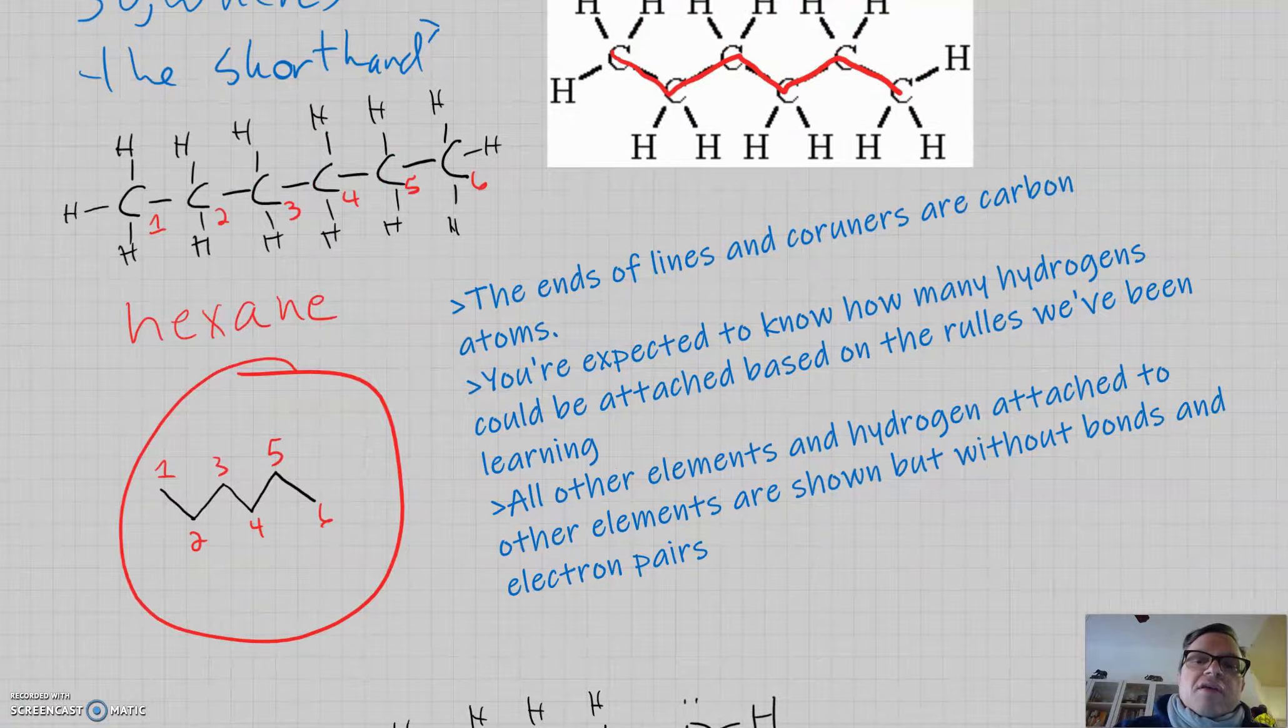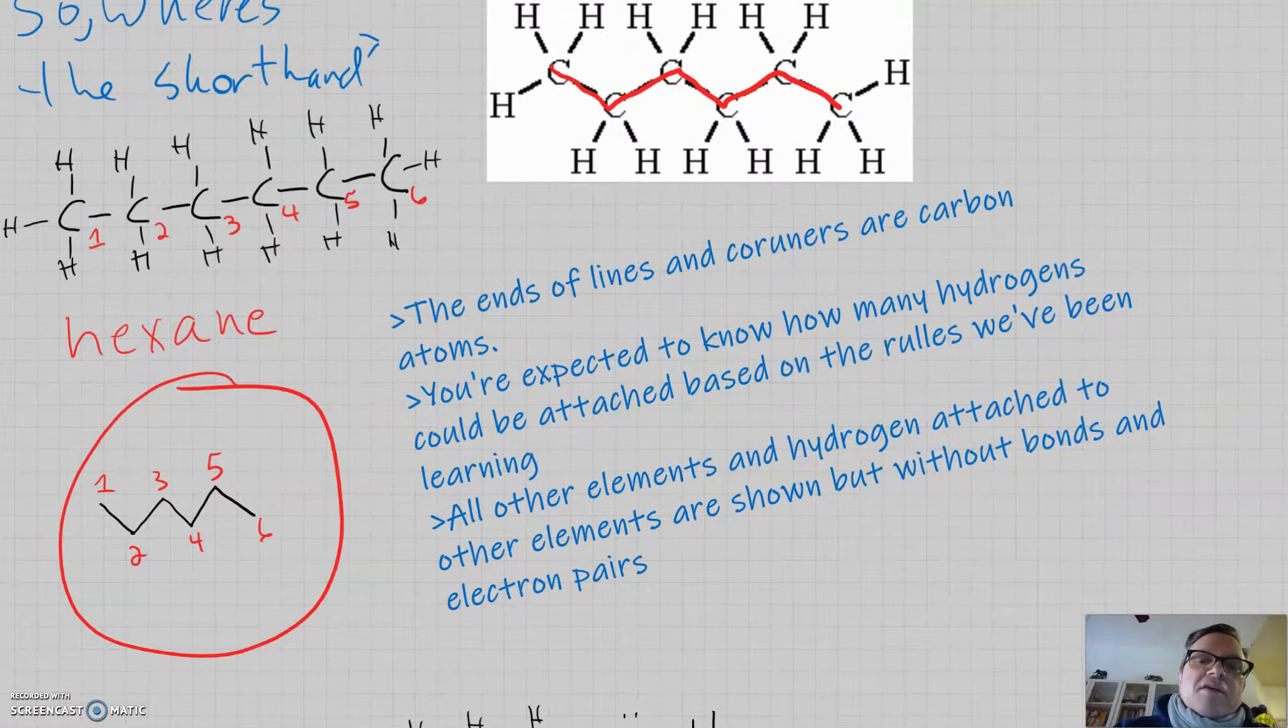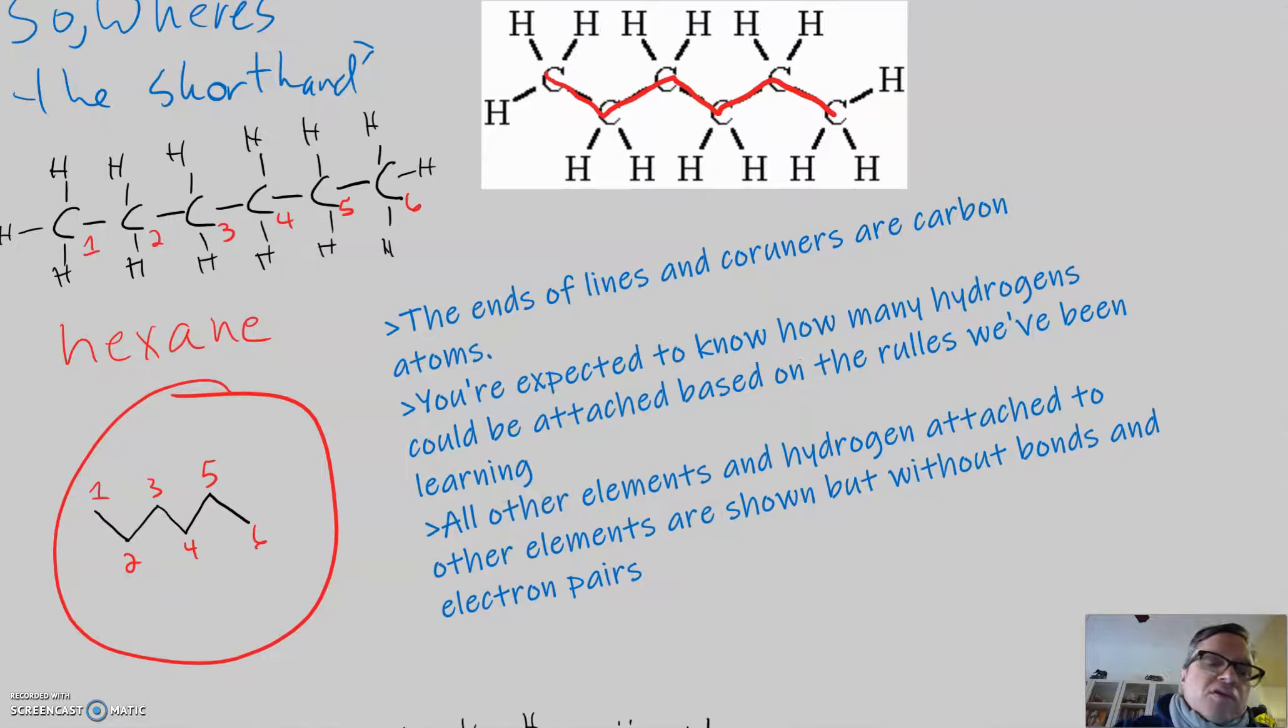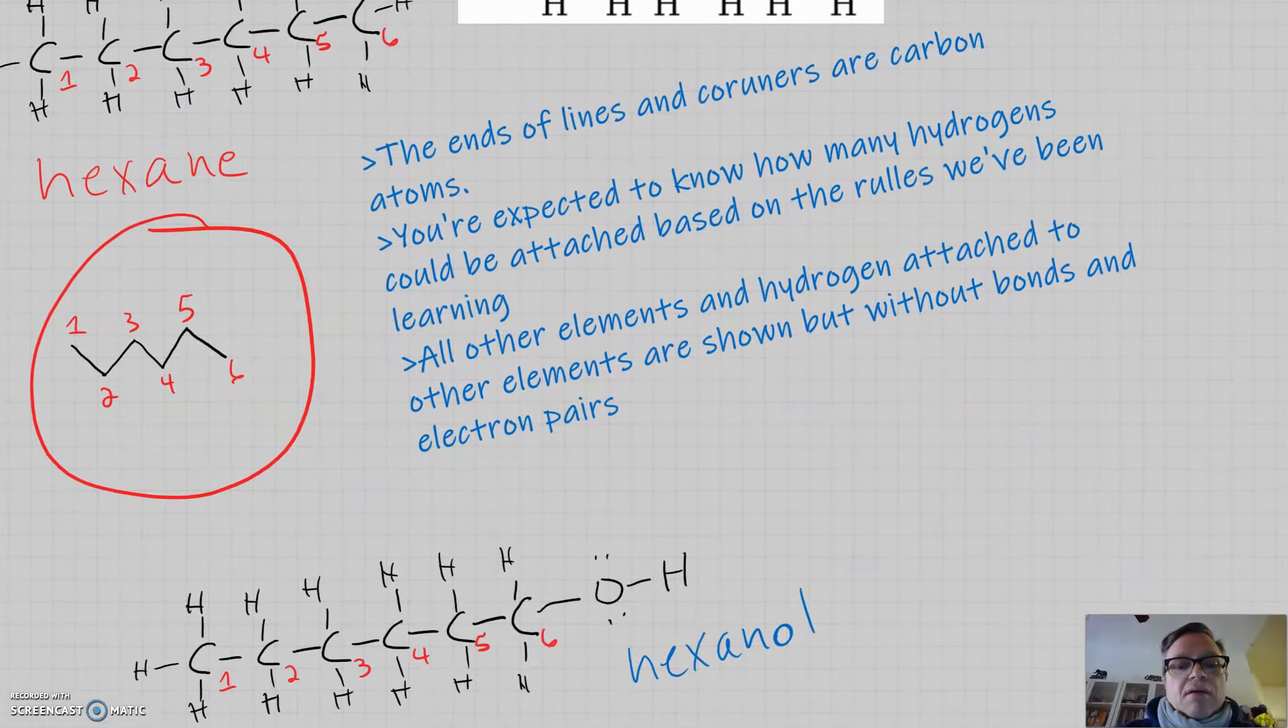But, the point is that in these drawings, you draw simple lines to represent the carbon-hydrogen chain. And the ends of each line are carbons. And the corners in the zigzag are carbons. And you're expected to know where the hydrogens are. So, this squiggly line is the same as this structure.